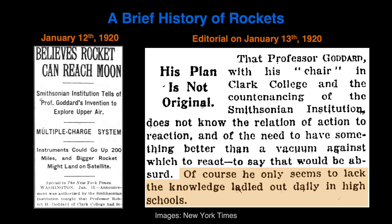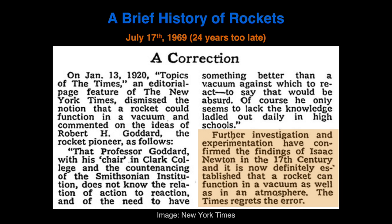Robert Goddard was heavily criticized when he was alive. On the left is a newspaper clipping from the front page of the New York Times on January 12, 1920. The article read: 'Believes rocket can reach moon — Smithsonian Institution tells of Professor Goddard's invention to explore upper air.' The next day, an editorial stated that Professor Goddard 'does not know the relation of action to reaction and of the need to have something better than a vacuum against which to react — he only seems to lack the knowledge ladled out daily in high schools.' On July 17, 1969, only days before Neil Armstrong stepped foot on the moon, the New York Times issued a correction, stating that 'it is now definitely established that a rocket can function in a vacuum as well as in an atmosphere. The Times regrets the error.' The correction was 24 years too late, since Robert Goddard died in 1945.